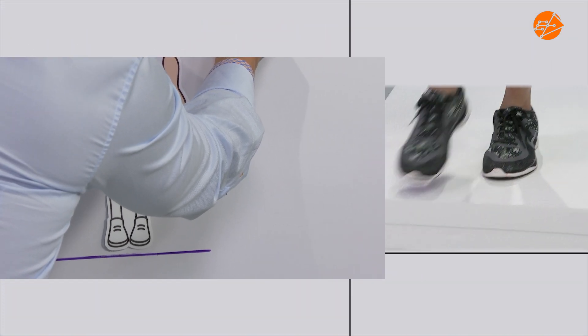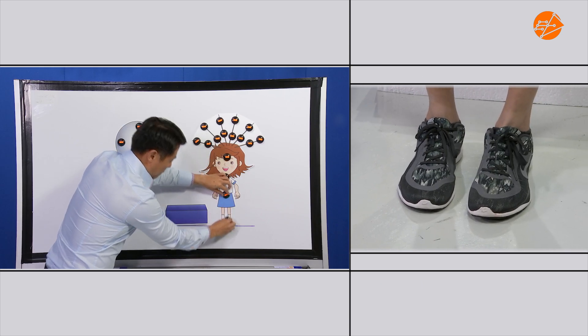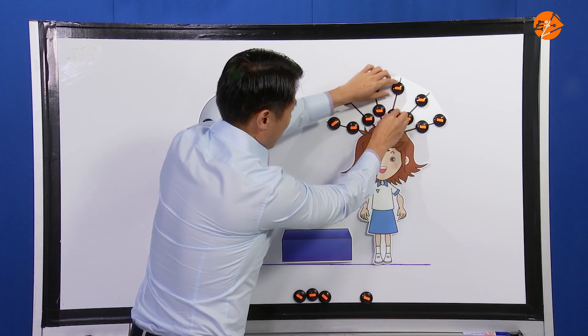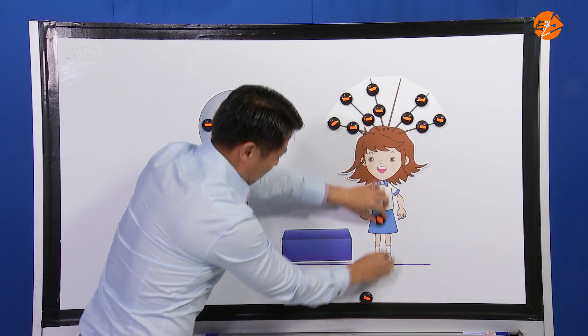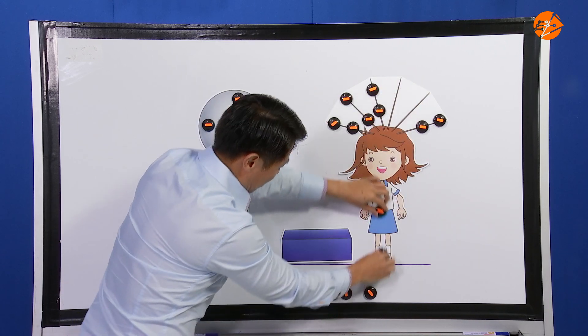Once my student steps off the insulator, the electrons on her body move freely to the neutral ground due to electrostatic repulsion, hence neutralizing the negative charges on her body. As a result, her hair loses the charges and falls.